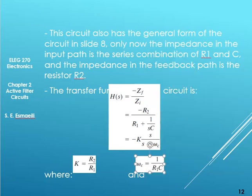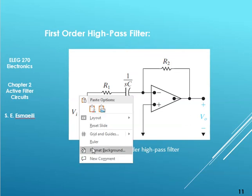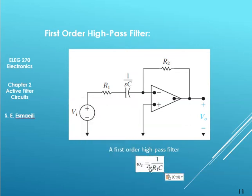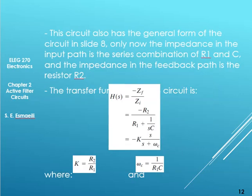The cutoff frequency of the high pass filter is 1 over R1C. What is the gain? Gain is still R2 over R1.